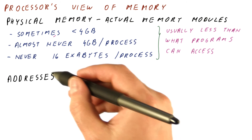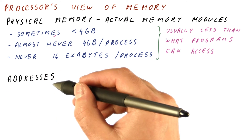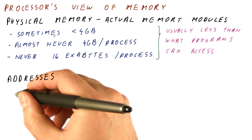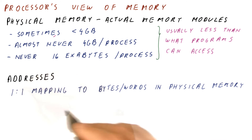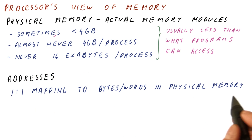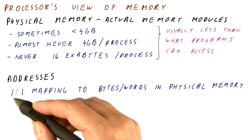The addresses that the processor uses for the physical memory have a one-to-one mapping to the bytes or words in the physical memory. So a given address always goes to the same physical location, and the physical location always has exactly one physical address.